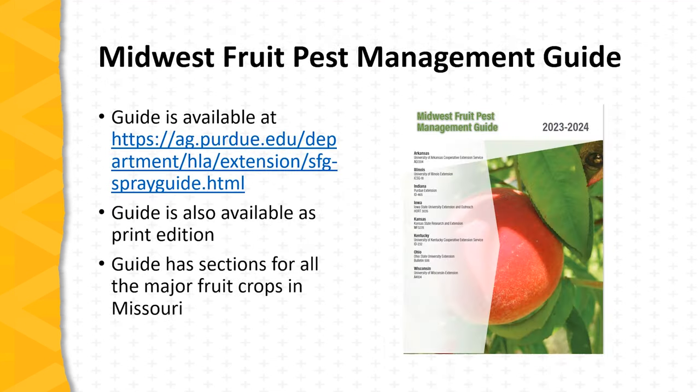Now that we've discussed the arthropod and disease issues of interest from the standpoint of dormant season pesticide applications, where do we find information on specific sprays and specific timing? That information is found in the Midwest Fruit Pest Management Guide. This guide is revised every two years. The online version is available at the website shown on the slide as a downloadable PDF, and the guide is also available as a print edition. The online guide is revised periodically and includes sections on all the major fruit crops grown commercially in Missouri.